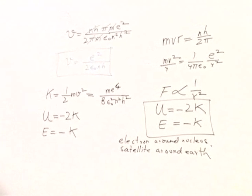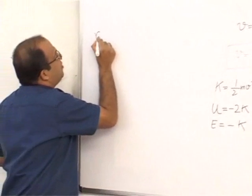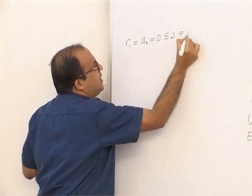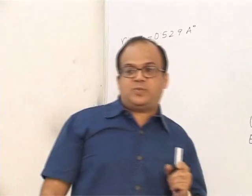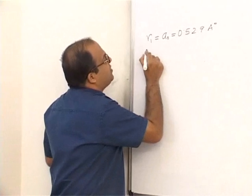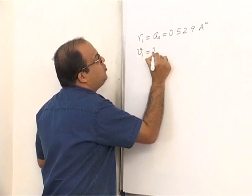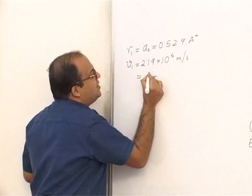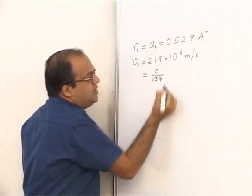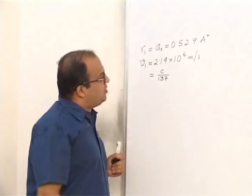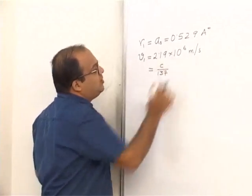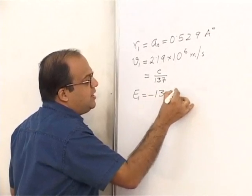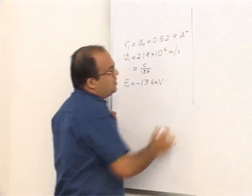We should also memorize certain numerical values. The radius of the first orbit of hydrogen, written as a₀, is 0.529 Å. The velocity of the electron in the first orbit is 2.19 × 10⁶ m/s, which equals c/137, where c is the speed of light. The energy of the electron in the first orbit of hydrogen is −13.6 eV.